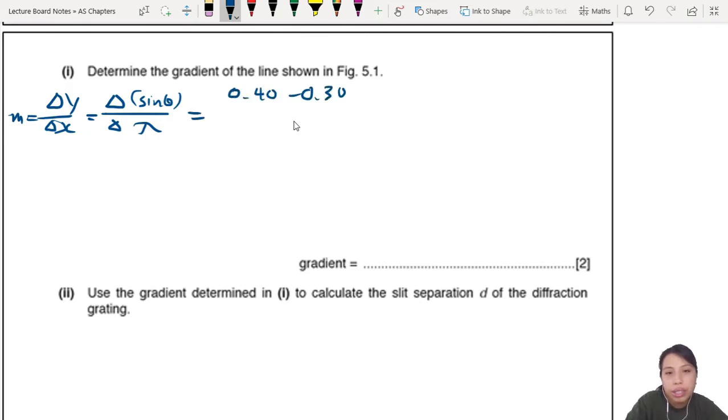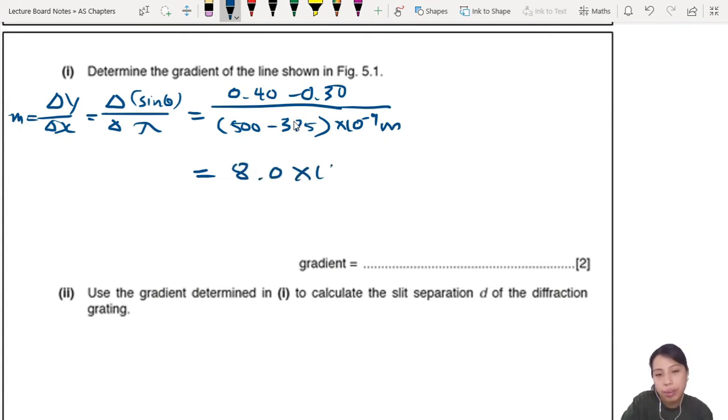So sin θ will be my values that I chose - you can choose another one, it's up to you. 0.4 minus 0.30 over 500 minus 375 nanometer, so I should probably change this to meters too. So what's my gradient? I calculate everything, I should get 8.0 × 10^5 m^-1. So right here, 8 × 10^5 m^-1 - this is my gradient.